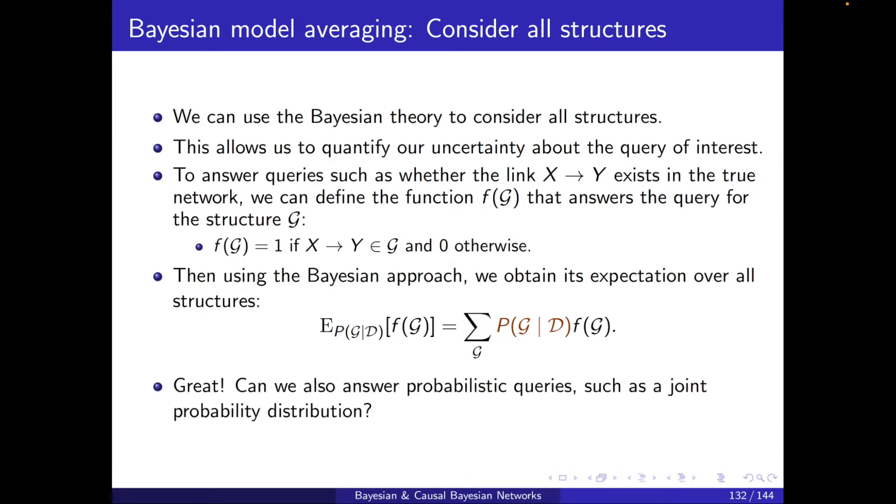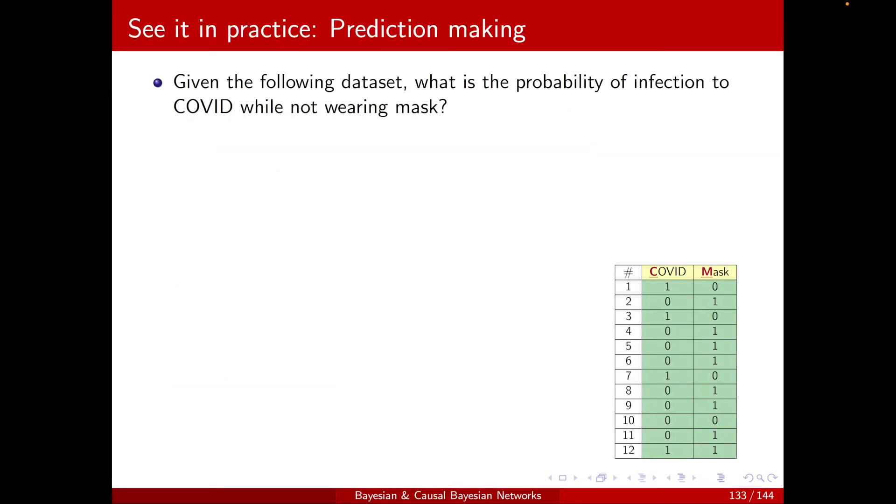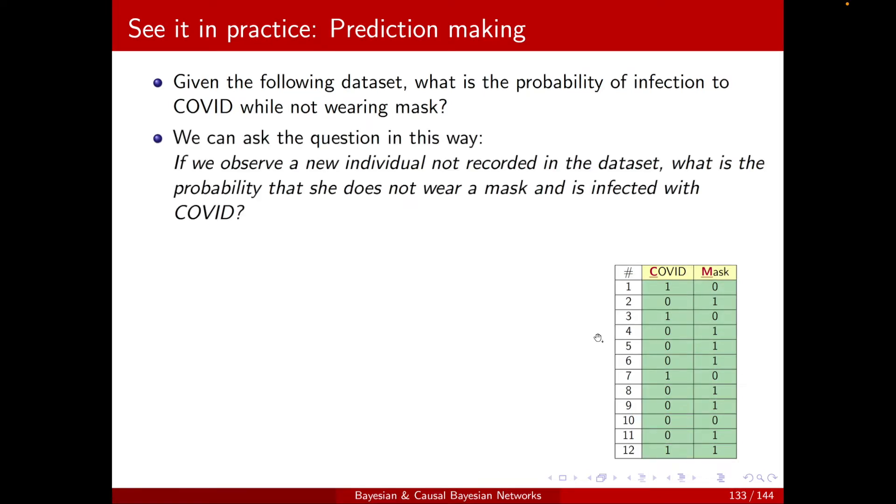Can we also answer probabilistic queries such as a joint probability distribution? Imagine that you're given this dataset, and you're asked to determine the probability of infection to COVID while not wearing a mask. We can ask this question in a different way. If we observe a new individual not recorded in the dataset, what is the probability that she does not wear a mask and is infected with COVID?